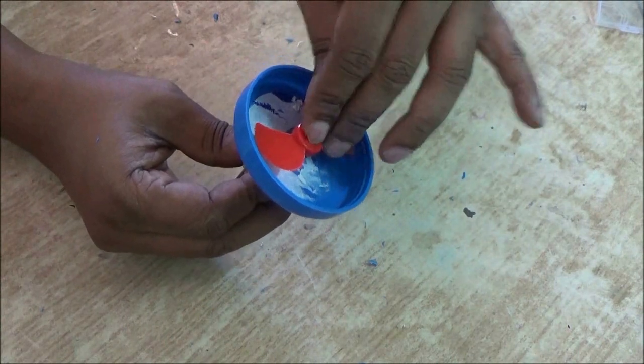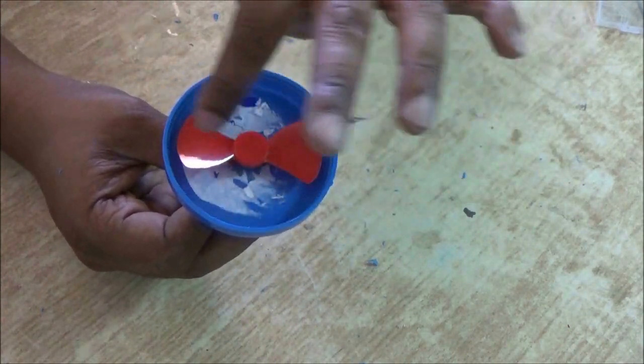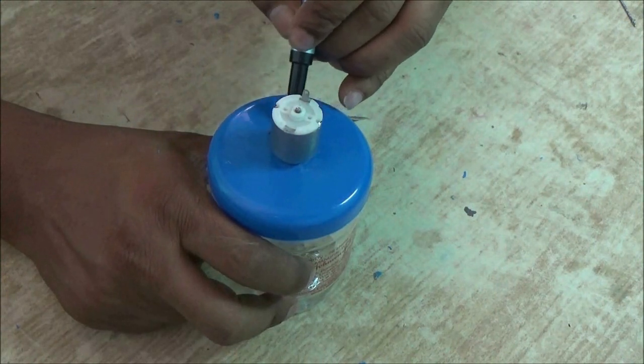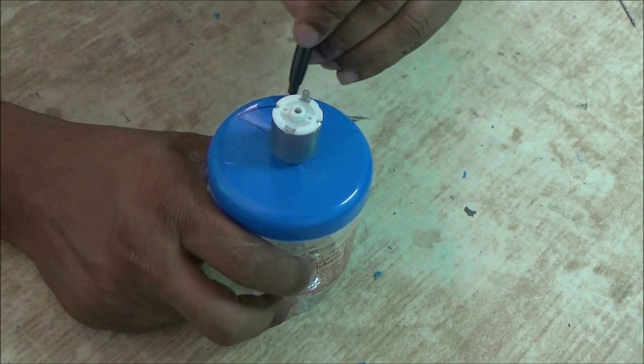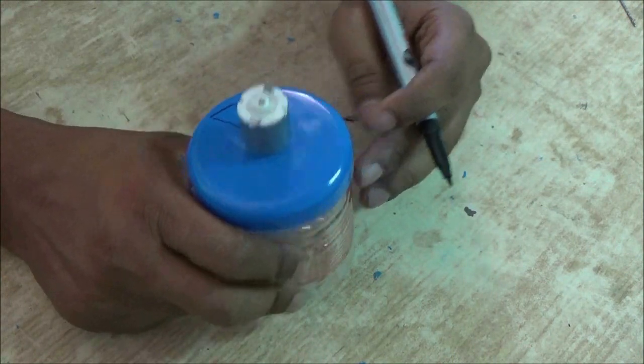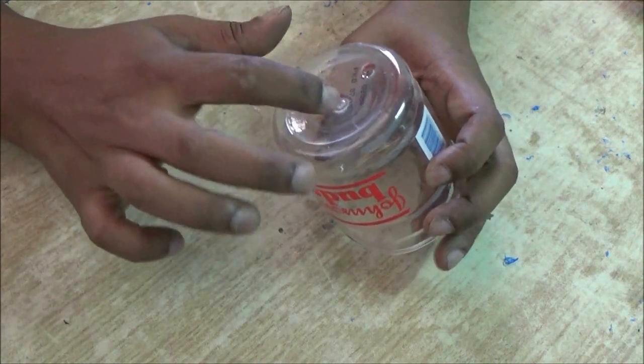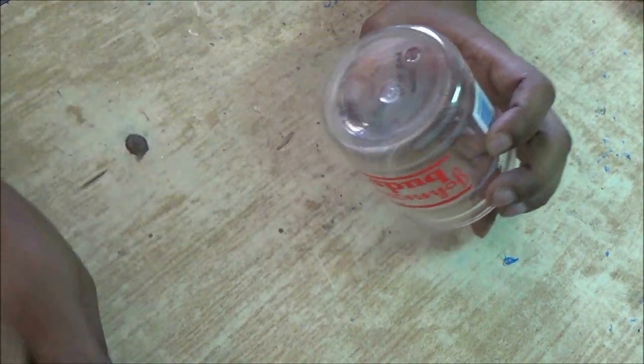Place the propeller and see it's freely rotating. Now on top of the cap, we have to cut some windows like this. I have used a hot knife to cut these windows. On the bottom part, you have to make a hole.